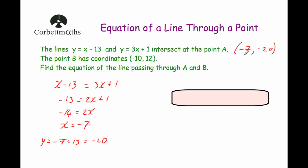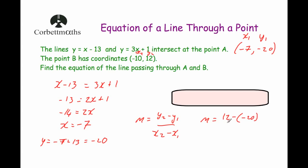Now that we know A is the point (-7, -20), we need to find the gradient of the line passing through A and B. Using m equals y2 minus y1 over x2 minus x1, and labeling A as (x1, y1) and B as (x2, y2): m equals 12 minus minus 20, over minus 10 minus minus 7. That simplifies to 32 over minus 3, which equals minus 32 over 3. We could also write this as minus 10 and two thirds.